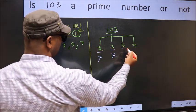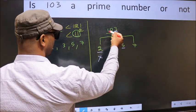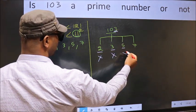Next number, 5. Last digit is neither 0 nor 5. So, this is not divisible by 5.